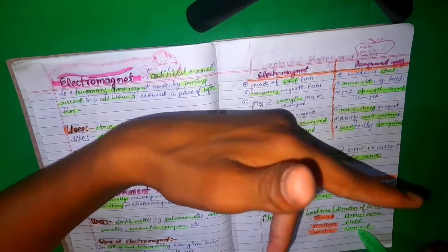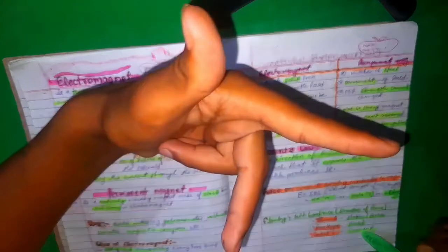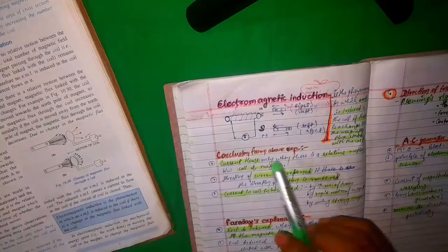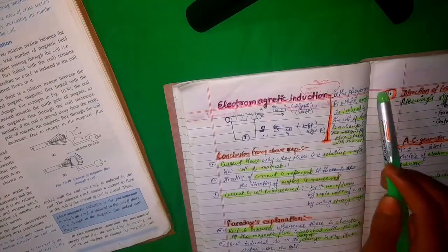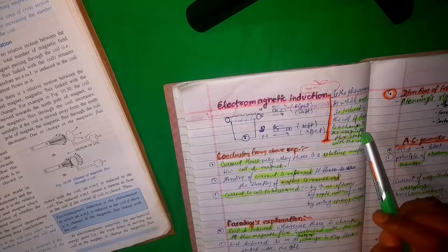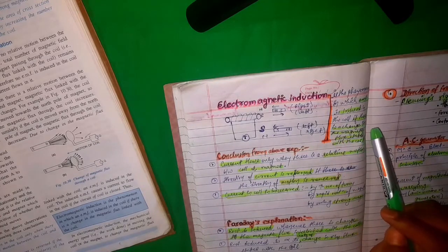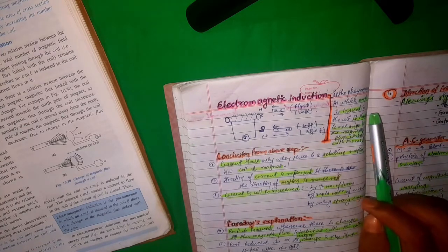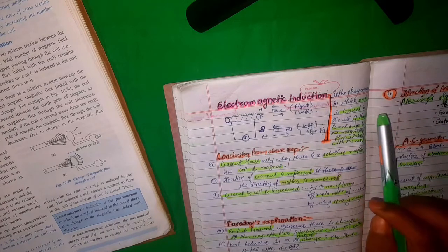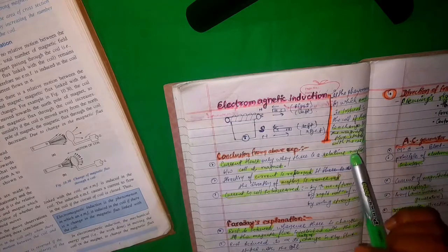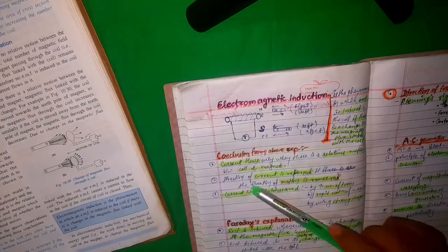In Fleming's left-hand rule: the thumb is for force, the index finger is for the magnetic field, and the middle finger is for the current. Now electromagnetic induction — it is the phenomenon in which EMF is induced in a coil when there is a change in the magnetic flux linked with the coil. EMF will be induced when there is a change in magnetic flux linked with the coil.